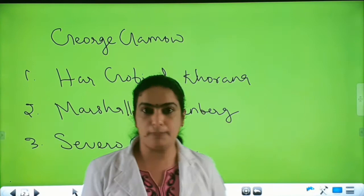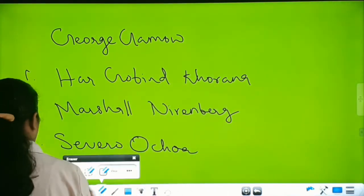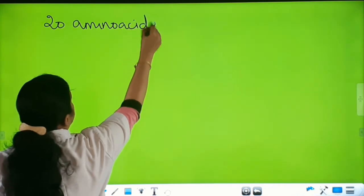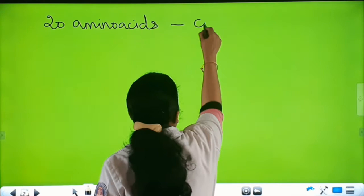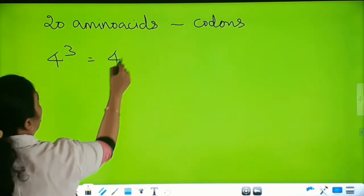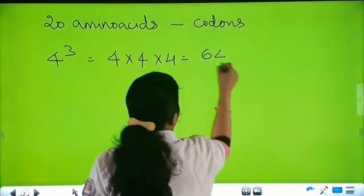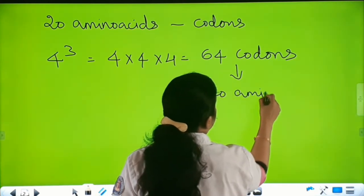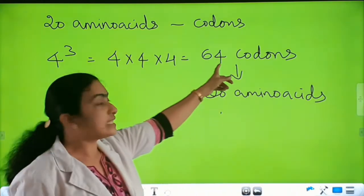They constructed a checkerboard. There are four nitrogen bases existing in the form of triplet codons for coding 20 amino acids. So four nitrogen bases taken three at a time — that is 4 × 4 × 4 — gives a total of 64 codons in order to code for 20 amino acids. So for 20 amino acids, 64 codons are there.